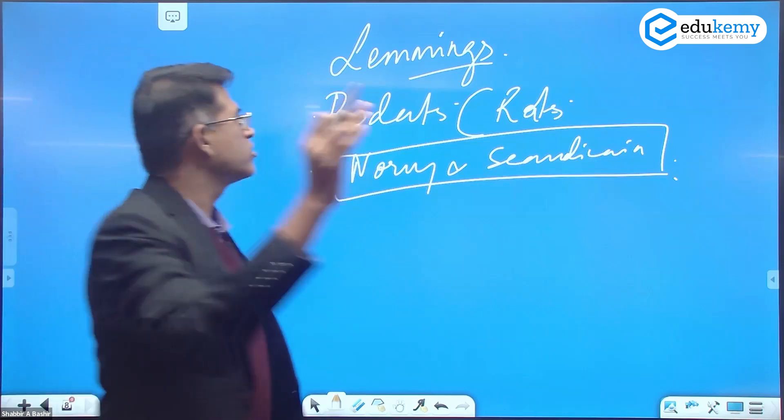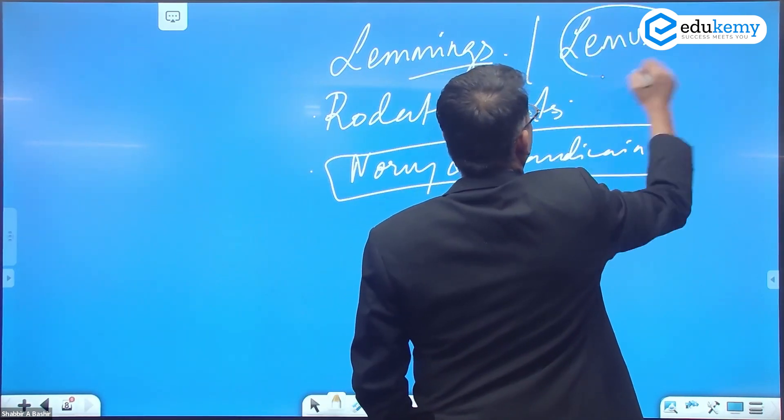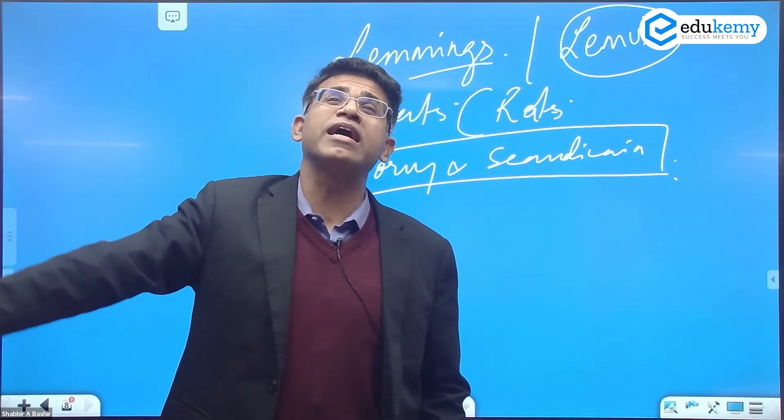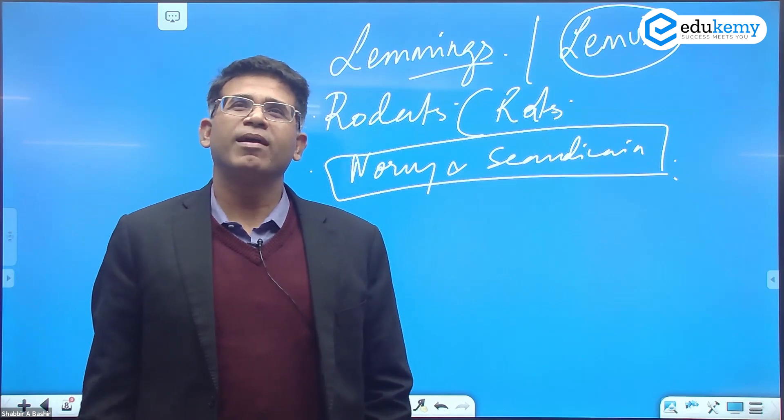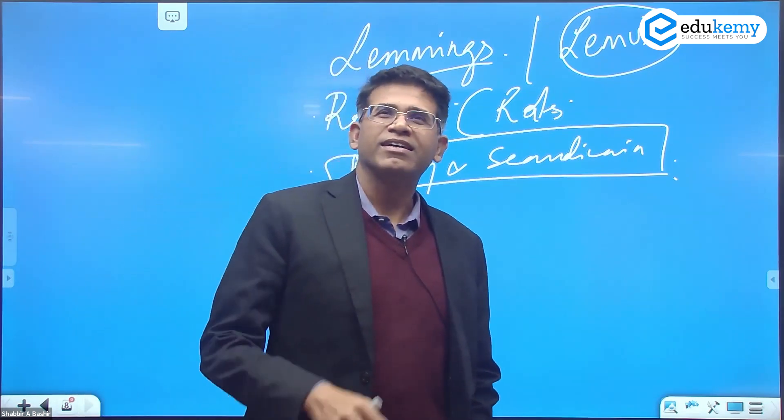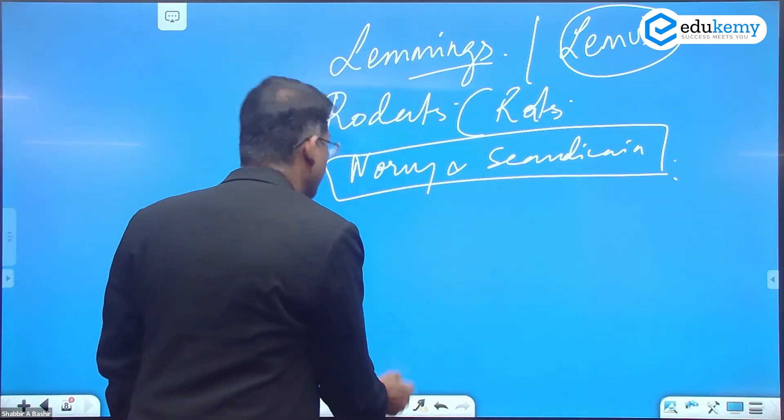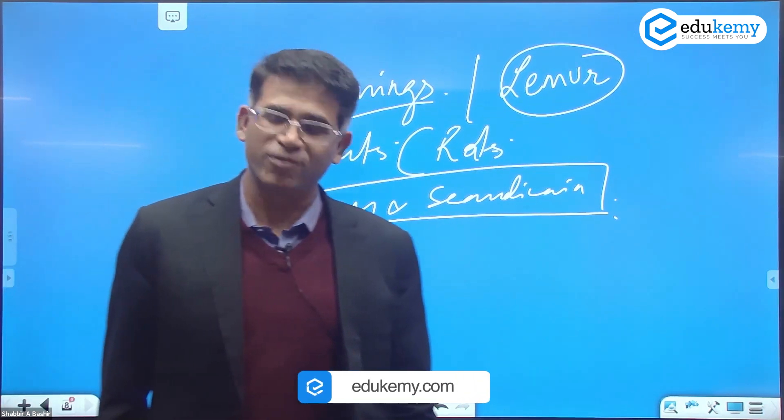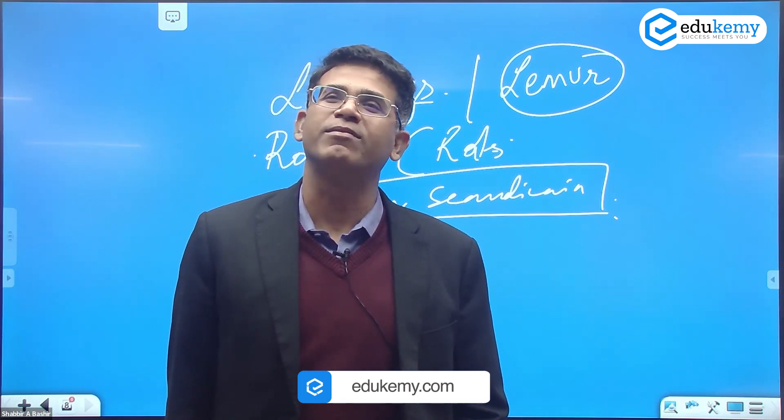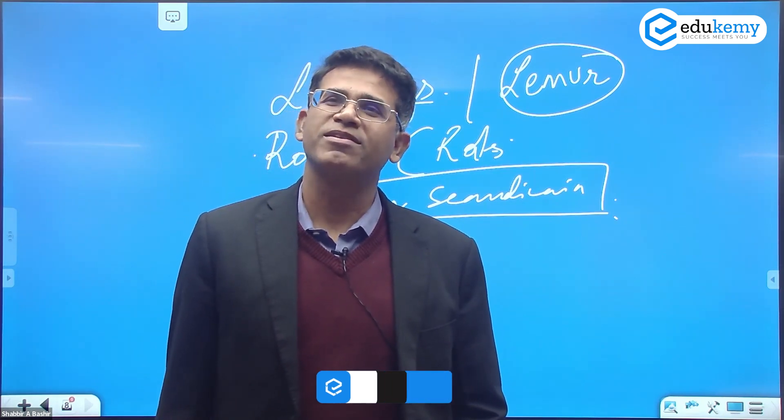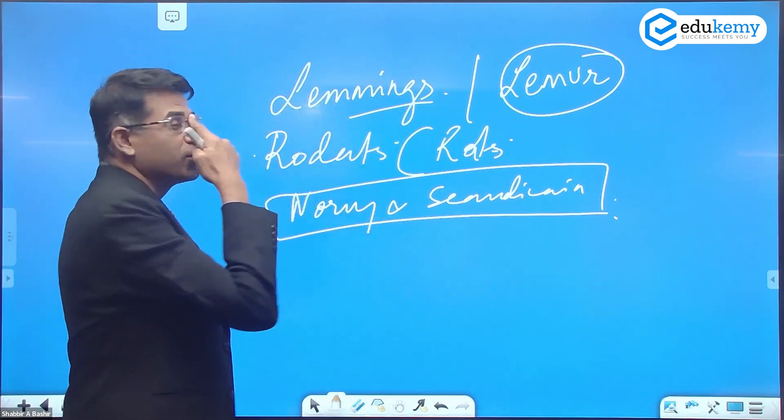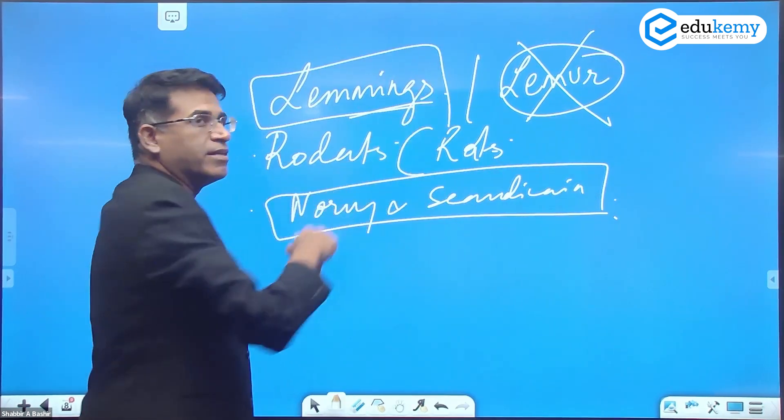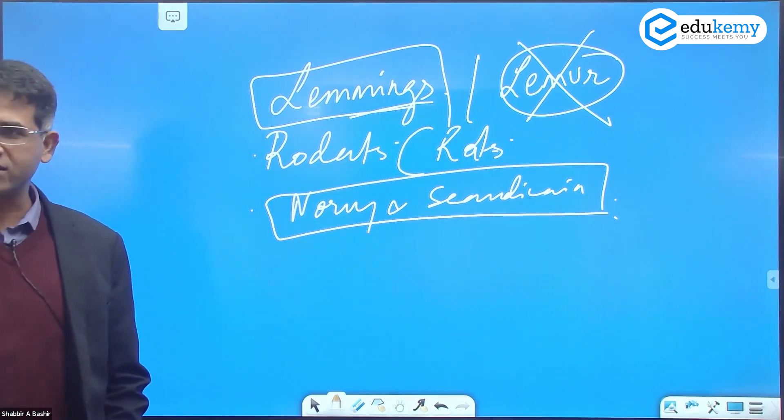Not lemurs. Lemurs are also a type of rodents, but they are found in Africa and Madagascar. I've watched all of that Madagascar movie. Lemmings are different. These are lemmings, like rats, found in Norway and Scandinavia.